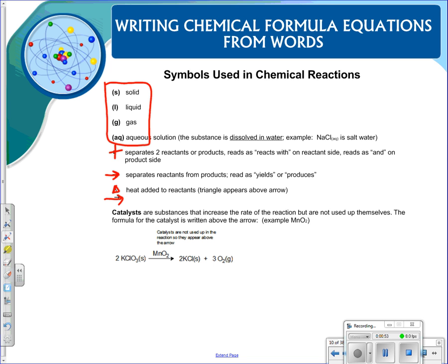Lastly, you may see the presence of catalysts in some of your chemical reactions. Catalysts are substances that increase the rate of the reaction but are not used up themselves. The formula for the catalyst will be written above the arrow. So in this example, manganese oxide is our catalyst. It's not actually reacting with the reactants, but it's speeding up the reaction so it happens more quickly.